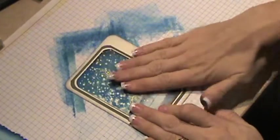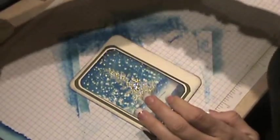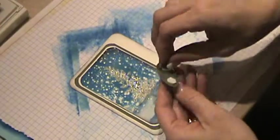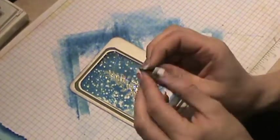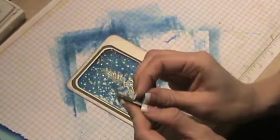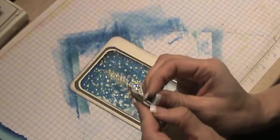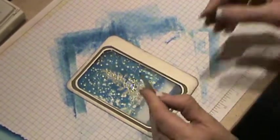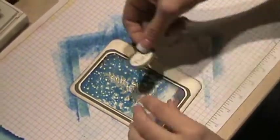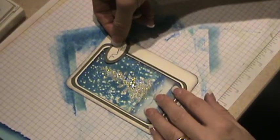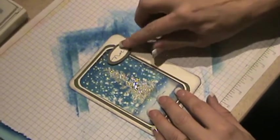I have stamped Noel in Pacific Point ink, and punched it out with a small oval punch. I've punched out a scrap piece of Always Artichoke with a large oval punch, and I'm going to be able to just place that on with a couple of dimensionals on either side.